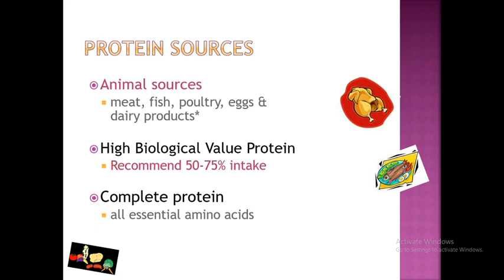Protein sources fall into two categories: animal sources and plant sources. Animal sources are the most important and include fish, poultry, eggs, and dairy products. These are high biological value proteins and complete proteins. High biological value protein provides 50 to 75 percent of intake, while complete proteins provide all essential amino acids.